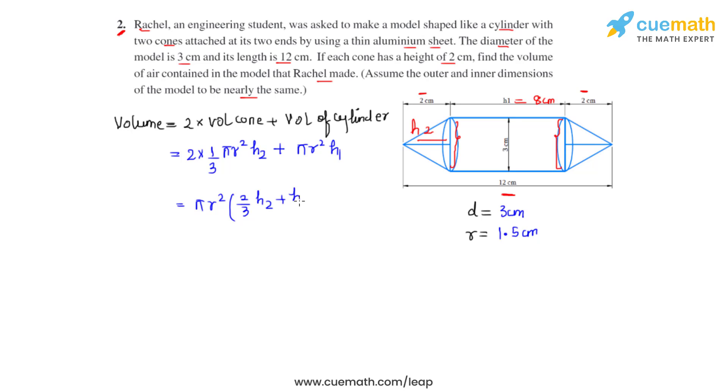Let's substitute the values: 22/7 times 1.5 times 1.5 times (2/3 times h2, which is 2, plus h1, which is 8). That gives us 22/7 times 1.5 times 1.5, which gives us 2.25, times 2/3 times 2, which gives us 4/3. 4/3 plus 8 will give us, by taking the LCM, an answer of 28/3.